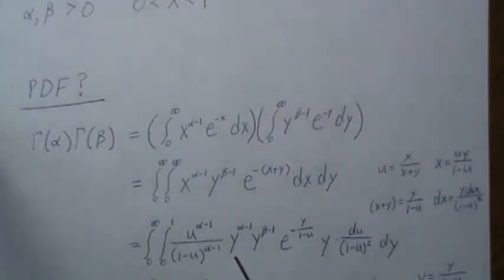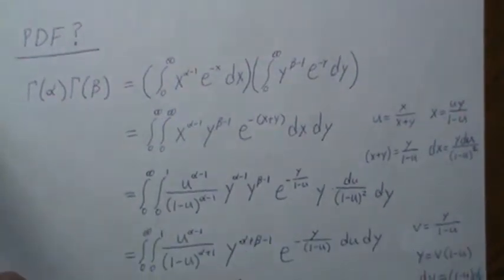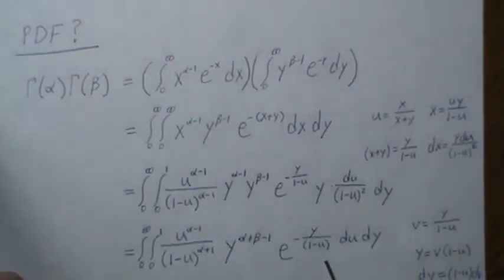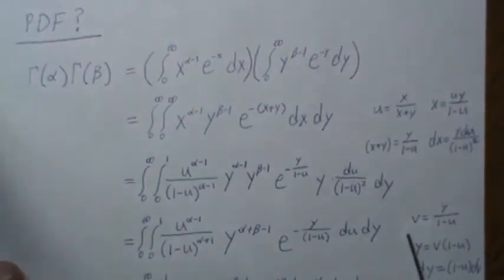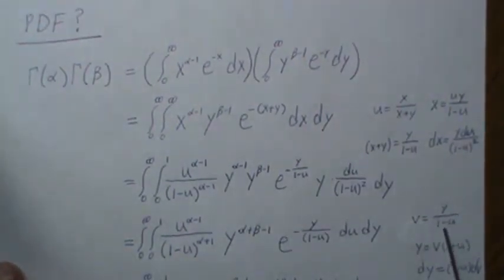Then we combine like terms, the Y's, and we get this. Now let's do another substitution: let V equal Y over 1 minus U. Then you can solve for Y and take DY DV.